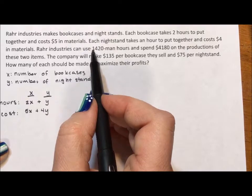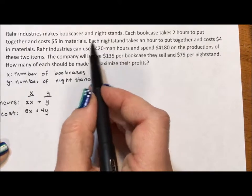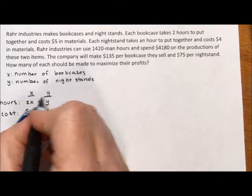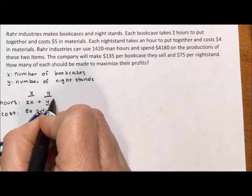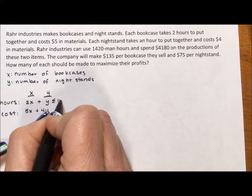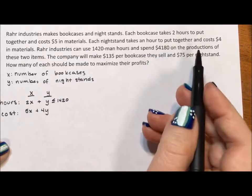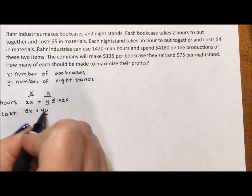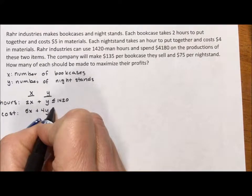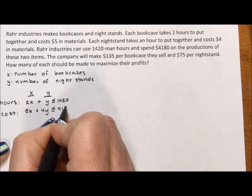Raw Industries can use 1420 man hours, so this is the total hours available, and because they can't go above this, the number of hours for building the bookcases and nightstands has to be less than or equal to 1420. They can spend $4180. Same deal. This is their budget. They can't go above this, so whatever they spend on creating bookcases and nightstands has to be less than or equal to this four thousand one hundred and eighty dollars.